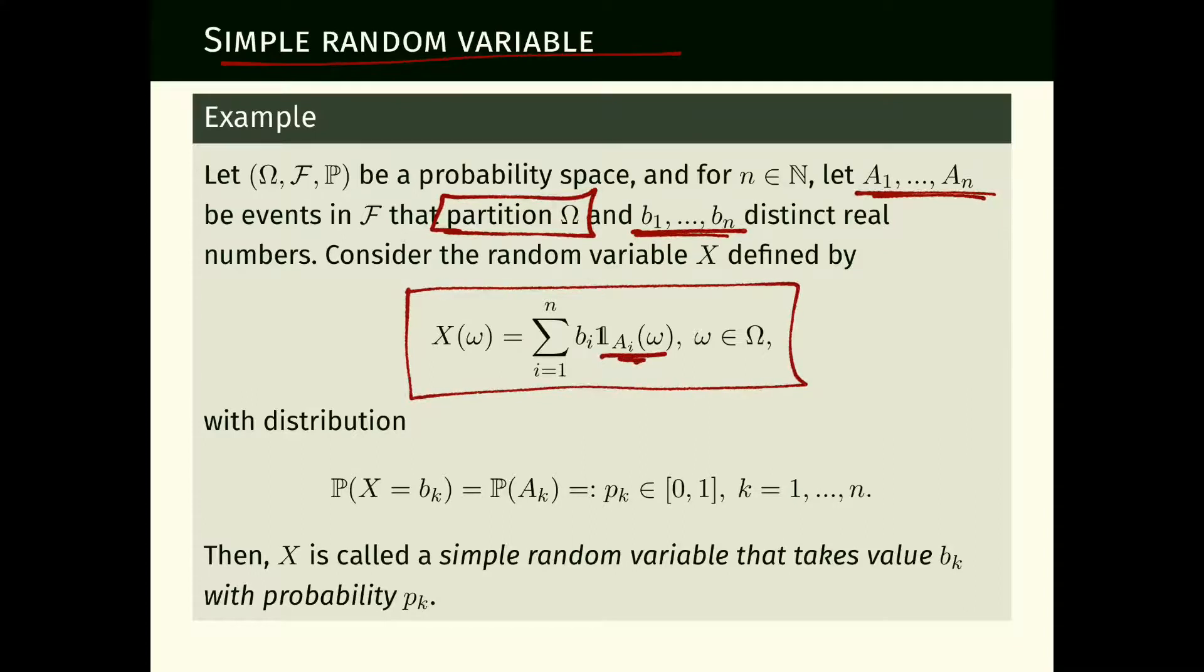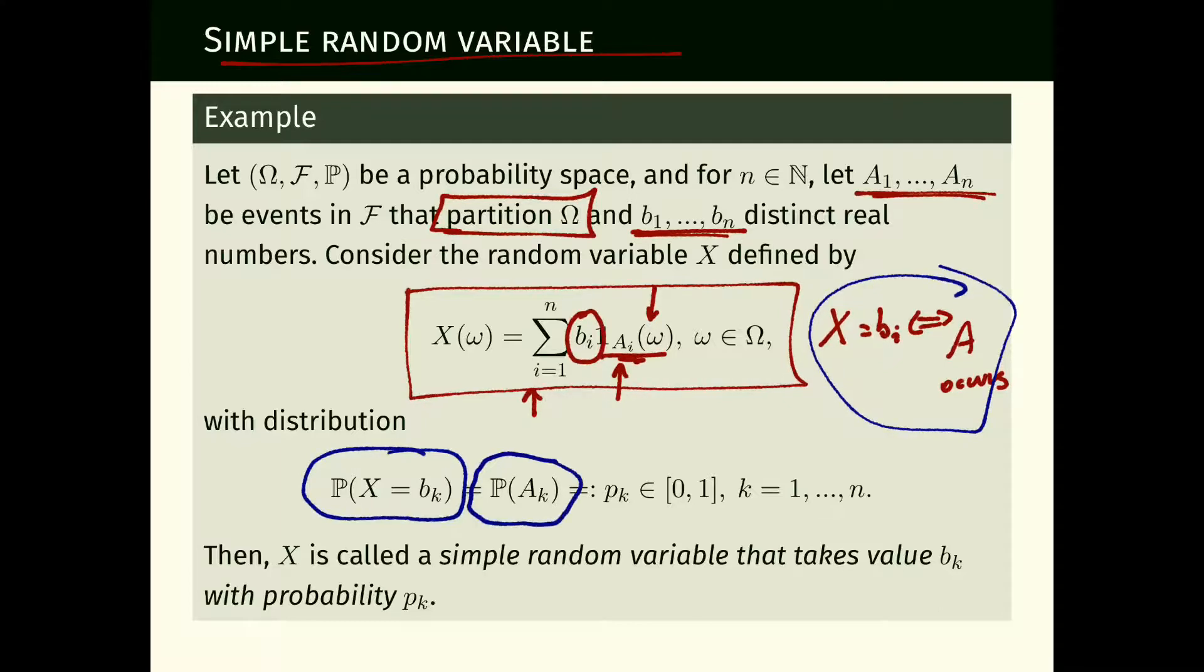We can define x by this formula. The indicator is always zero except for the index i that contains little omega, and for that index i we assign the value b_i to the random variable. This is consistent with the fact that x takes value b_i on the event that A_i occurs. In this case, the probability that x takes that value is the probability that A_k occurs, which we define as p_k. X is called a simple random variable that takes value b_k with probability p_k.